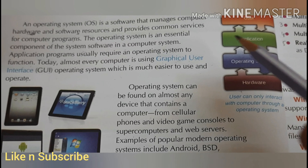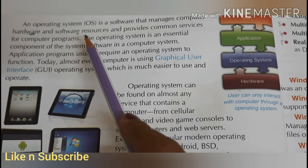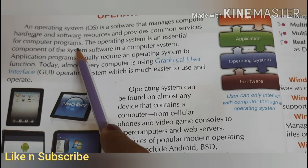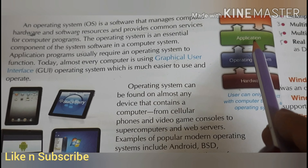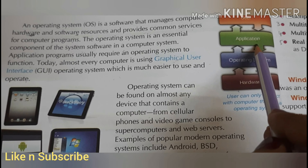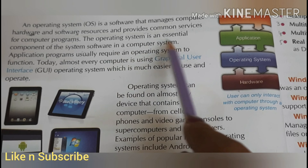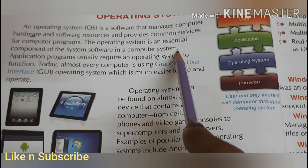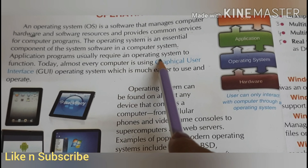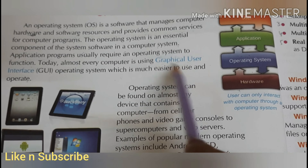So what is an operating system? An operating system is software that manages computer hardware and software resources and provides common services for computer programs. It manages the hardware and software resources, playing a middle role. The operating system is an essential component of system software. Application programs usually require operating system functions. Today, almost every computer is using GUI, that is Graphical User Interface.